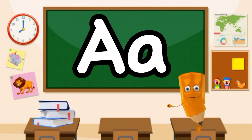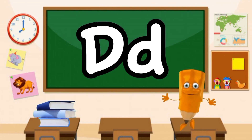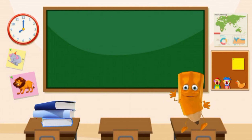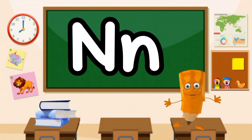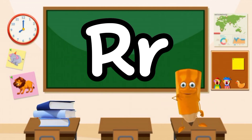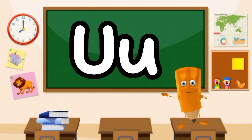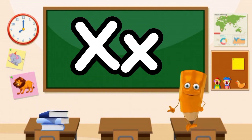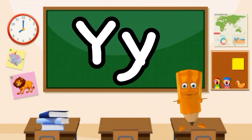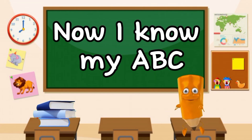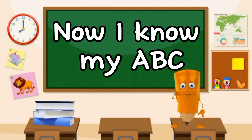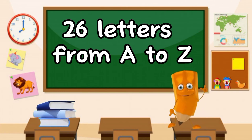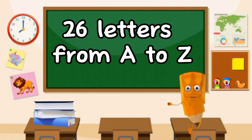A, B, C, D, E, F, G, H, I, J, K, L, M, N, O, P, Q, R, S, T, U, V, W, X, Y, and Z. Now I know my ABC, 26 letters from A to Z.